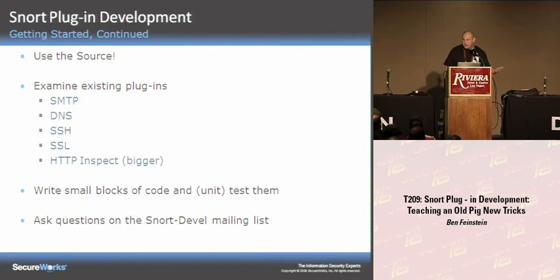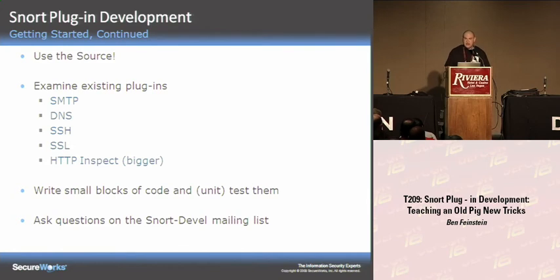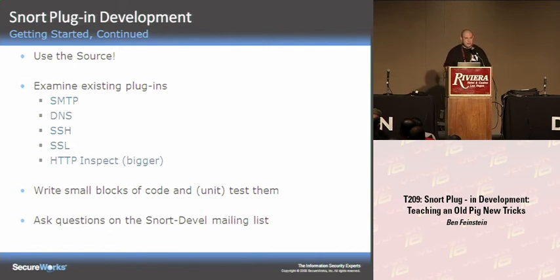How are you going to get started developing? Use the source — it's there. Start looking at existing plug-ins and how they work. The DNS plug-in is a good start; it's relatively small. The HTTP inspect plug-in is much more full-featured. I personally approach development by writing small blocks of code and unit testing them incrementally. And when you get stuck, go to the Snort developers list, post the problem you're having, and typically someone will have an answer for you.